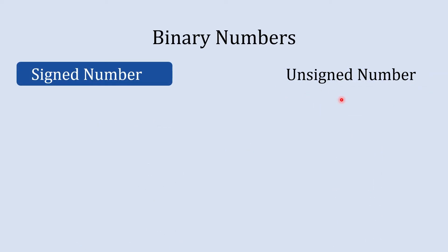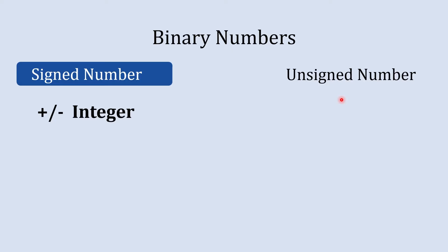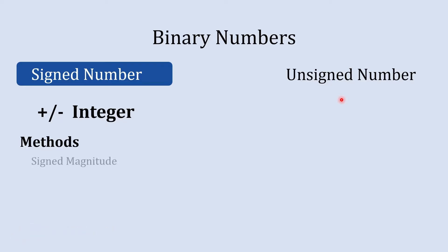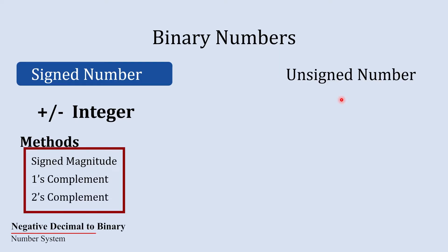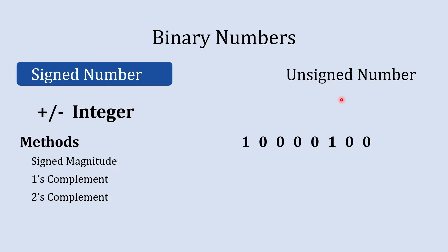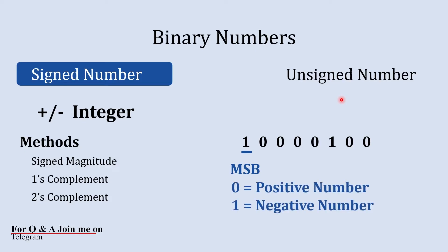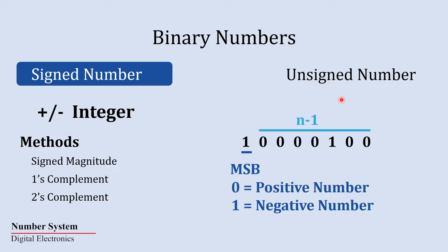Whereas signed numbers are a numerical representation that includes both positive and negative integers, and representing this is key in binary numbers. To represent signed numbers in binary we have methods like signed magnitude, 1's complement, and 2's complement. The fundamental for all these methods is the same: in an n-bit signed binary number the MSB is used to indicate the sign — 0 for positive, 1 for negative — and the remaining n minus 1 bits are used to indicate the magnitude.